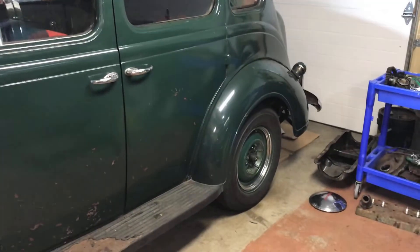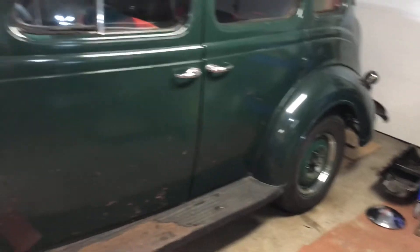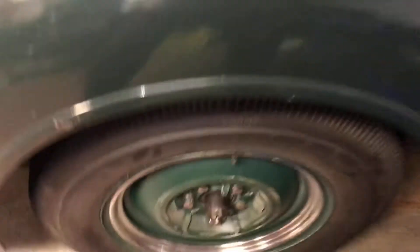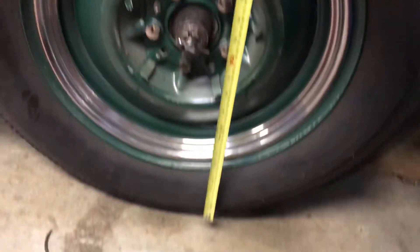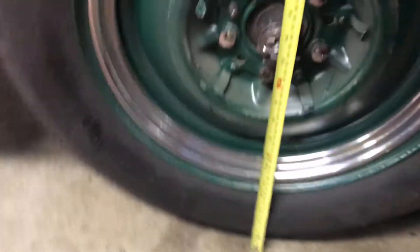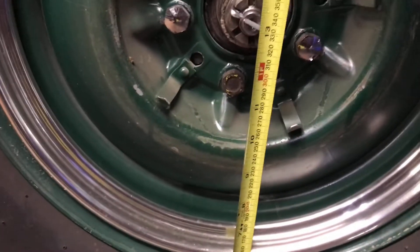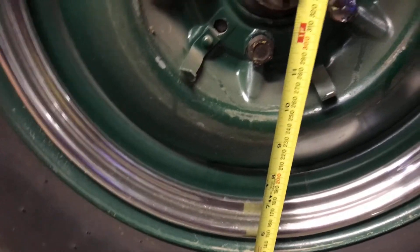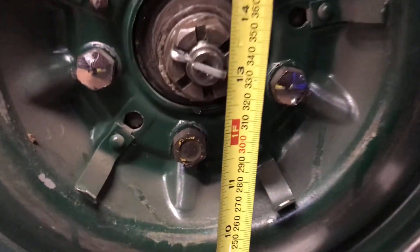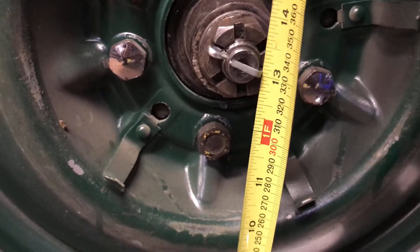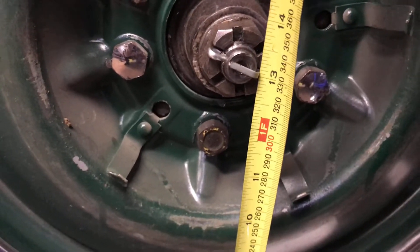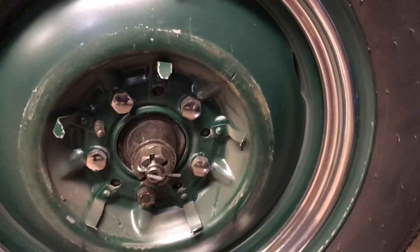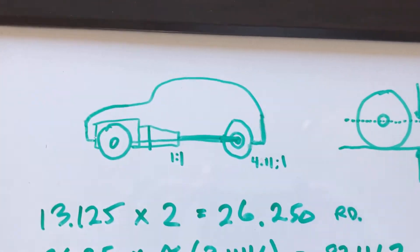For this example we're gonna use my 1938 Plymouth. I took off the hub cap here and from the ground to the center of the axle appears to be approximately thirteen and an eighth inches. Let's go do some math.